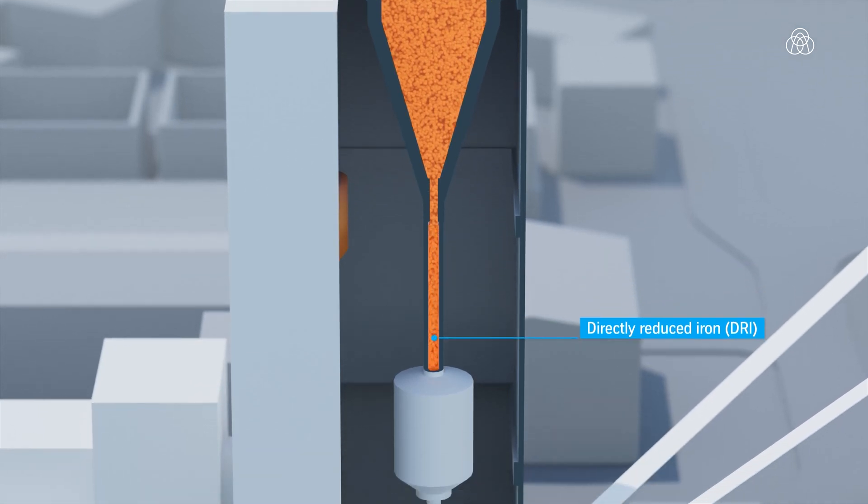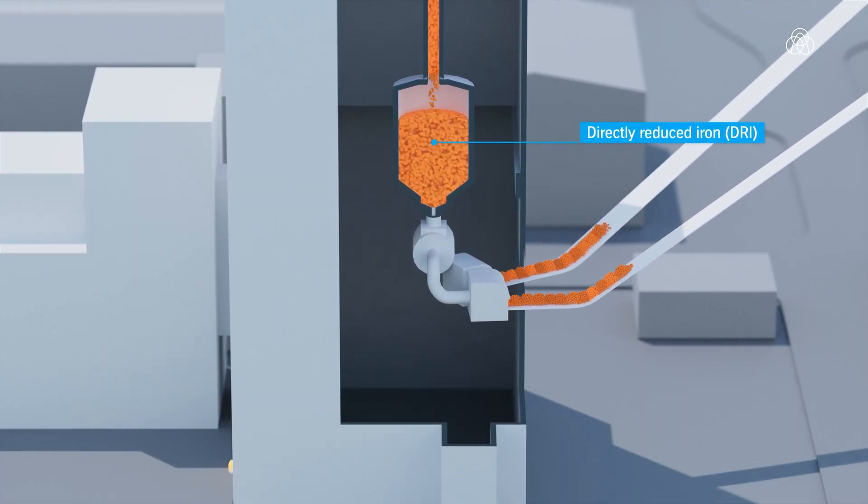Once the directly reduced iron has been discharged, it is transported directly to the melters.